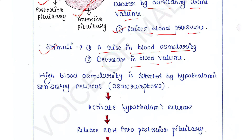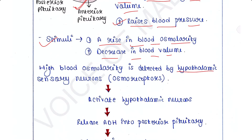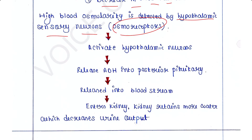High blood osmolarity means the number of solute particles is high in the blood. High blood osmolarity is detected by hypothalamic sensory neurons, which are also called osmoreceptors, that monitor changes in blood osmolarity. Once stimulated, osmoreceptors activate the hypothalamic neurons that synthesize and release ADH into the posterior pituitary.